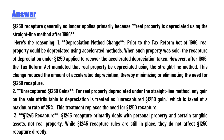Number two: unrecaptured 1250 gains. For real property depreciated under the straight line method, any gain on the sale attributable to depreciation is treated as unrecaptured 1250 gain, which is taxed at a maximum rate of 25 percent. This treatment replaces the need for 1250 recapture.